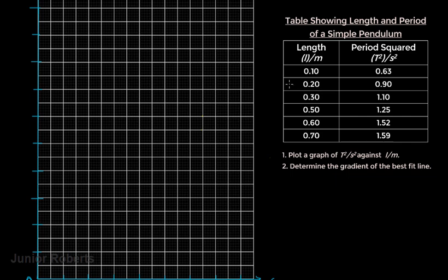The first thing this question wants us to do is to plot a graph of T squared against length — so we're plotting T squared in seconds squared against length in meters. Since T squared comes first in the instruction, we will plot T squared on the y-axis, and we will plot length on the x-axis. Whatever comes first we plot on the y-axis, and whatever comes last we plot on the x-axis.